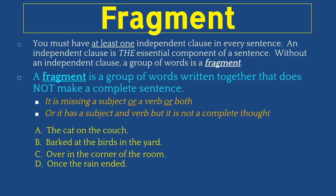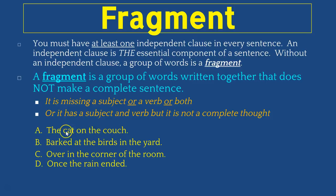A fragment is going to be missing one of those three required elements. For example, look at letter A: 'the cat on the couch.' Here we have 'cat' as the subject, we know where the cat is, but it's missing a verb. If it's missing one of the three requirements — in this case the verb — then what we have is a sentence fragment.